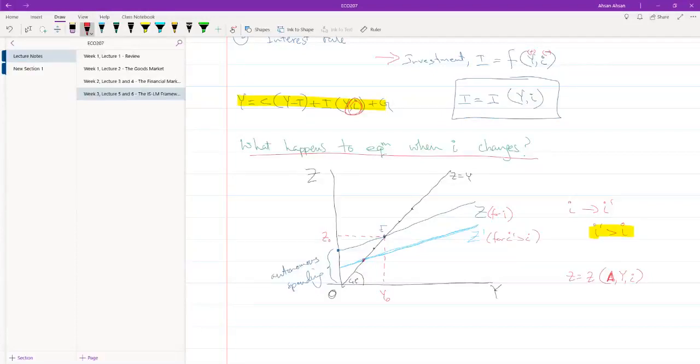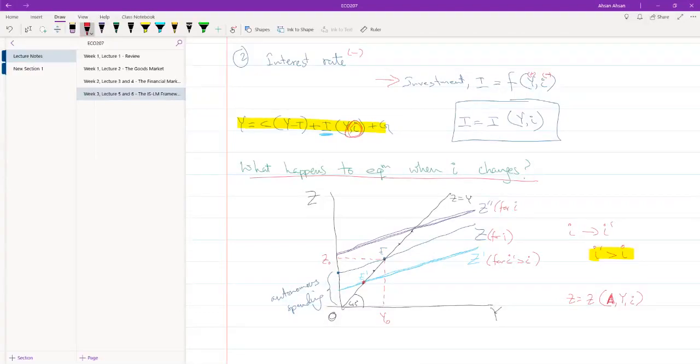And we end up with this. So this is Z prime, and this is for I prime, which is larger than I. This here is our new equilibrium I prime. Obviously you guys can guess that the converse, the reverse, is also true. If interest rate falls, loans would become cheaper. There would be more investment in the economy. If capital I is going up, Z would go up, Y would go up, and the curve would shift. So we would get something like this, and this would be Z prime prime. This is for I prime prime, which is less than I.